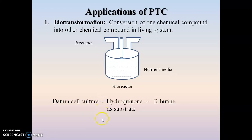An example is datura cell culture, in which datura cells convert hydroquinone — the substrate — into arbutine. Arbutine is generally used as a urinary antiseptic or diuretic. Similarly, steviol is converted into stevioside, which is 100 times sweeter than sugar. Likewise, biotransformation is utilized for the production of different kinds of secondary metabolites.